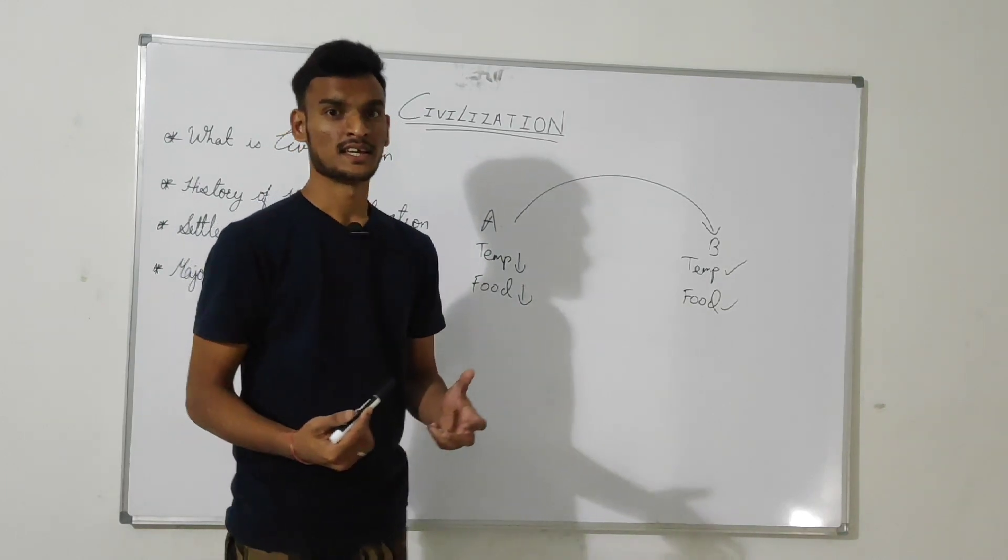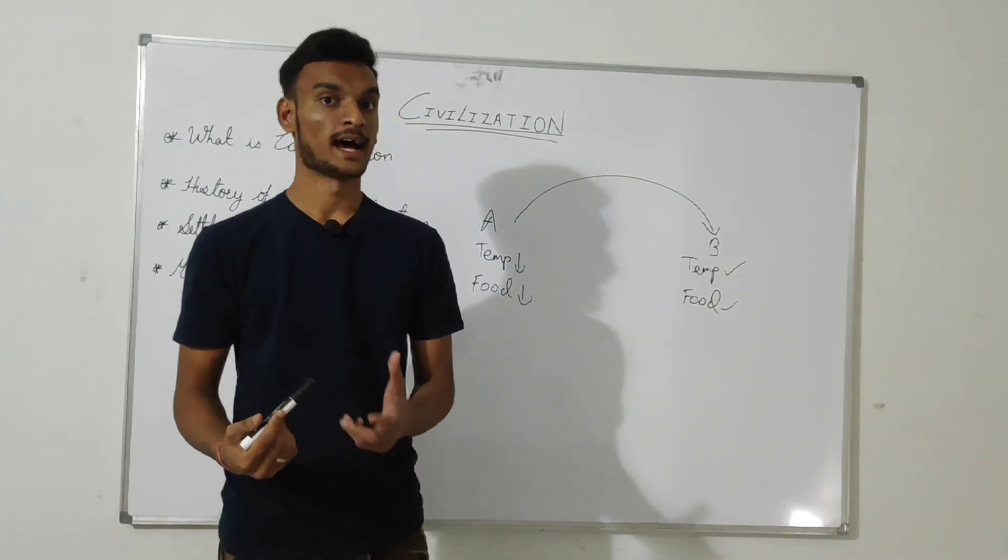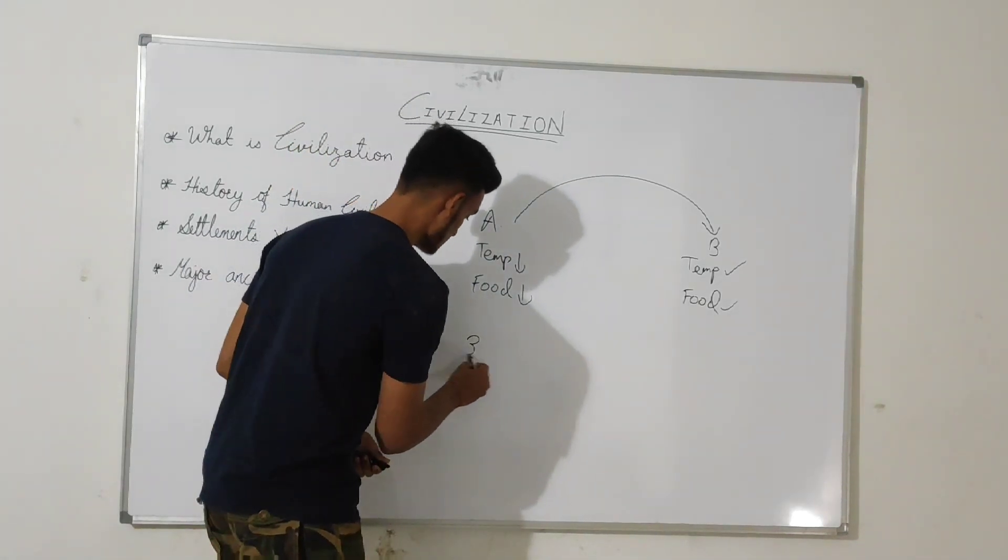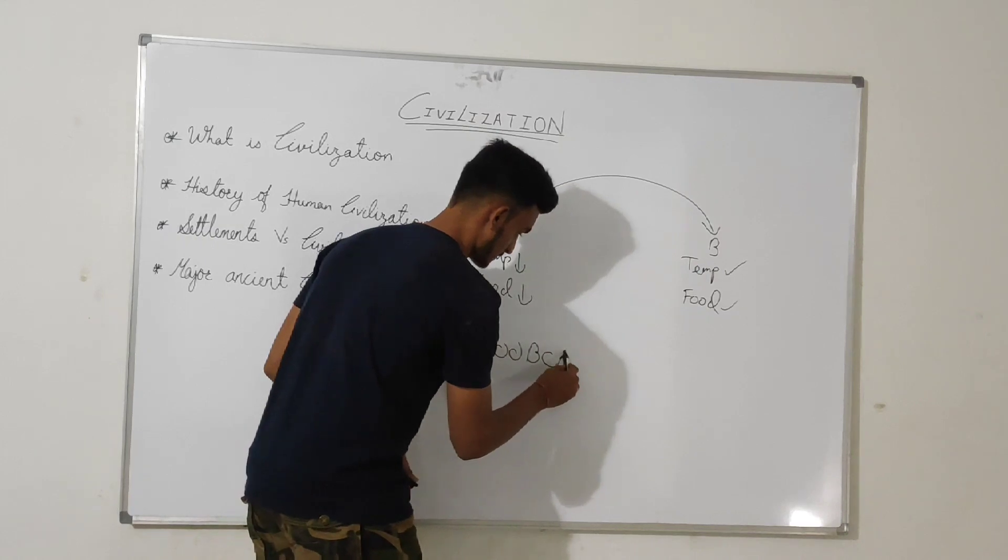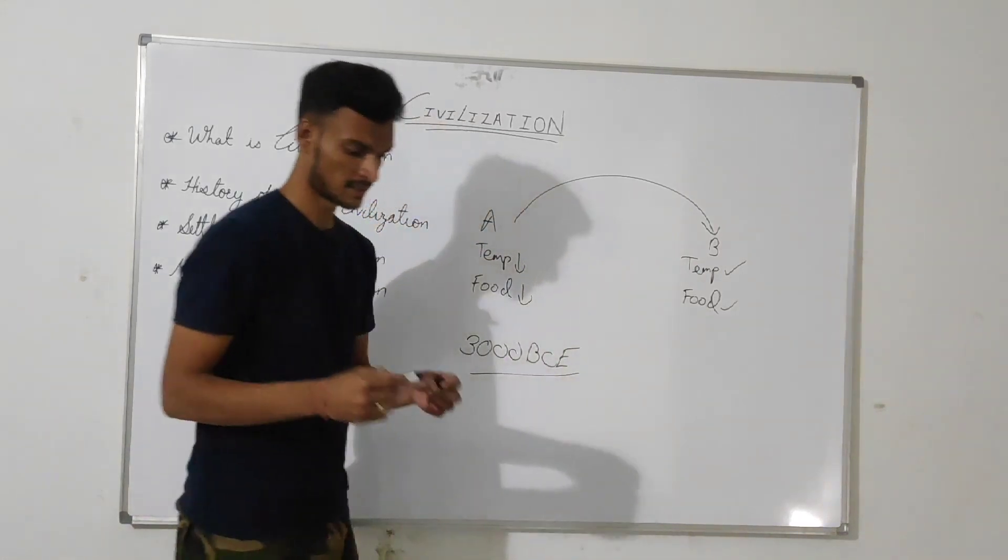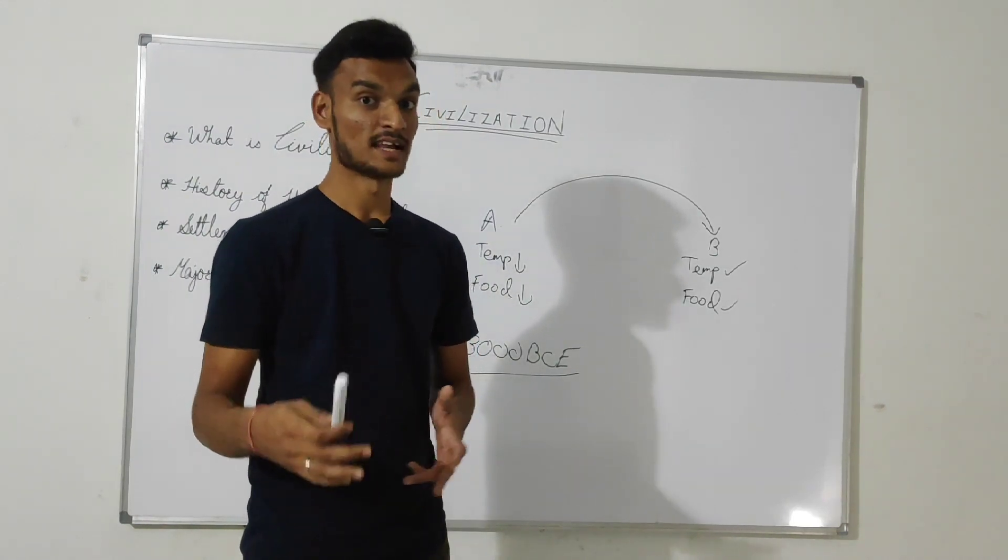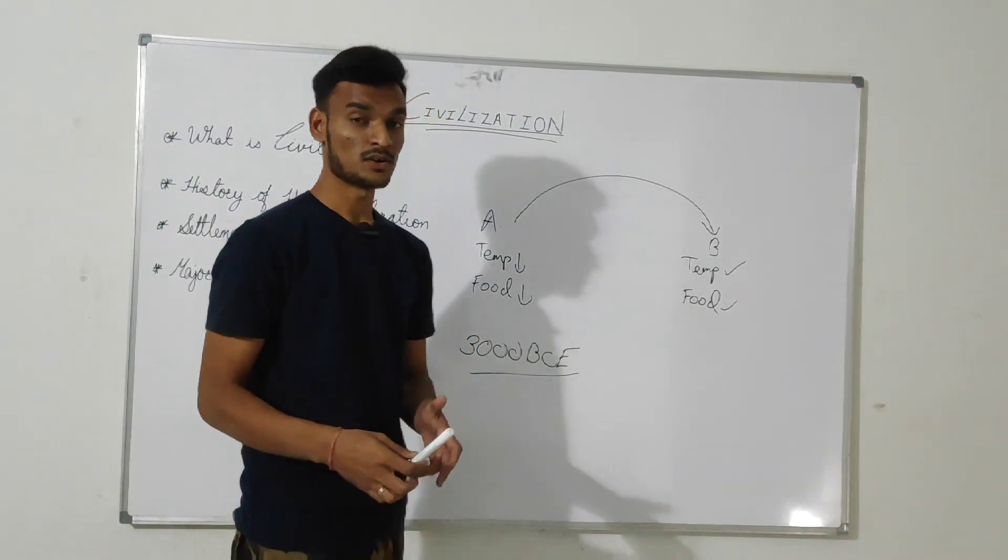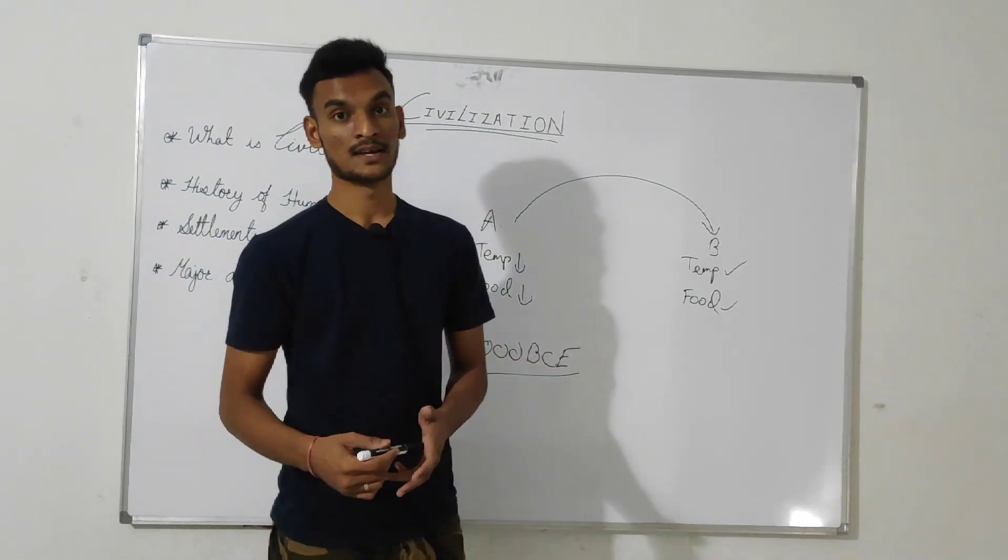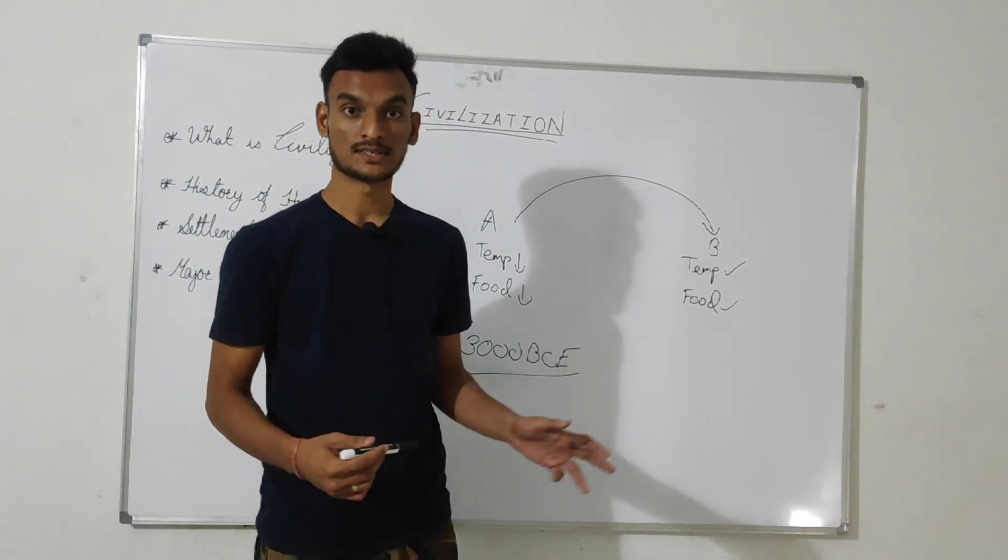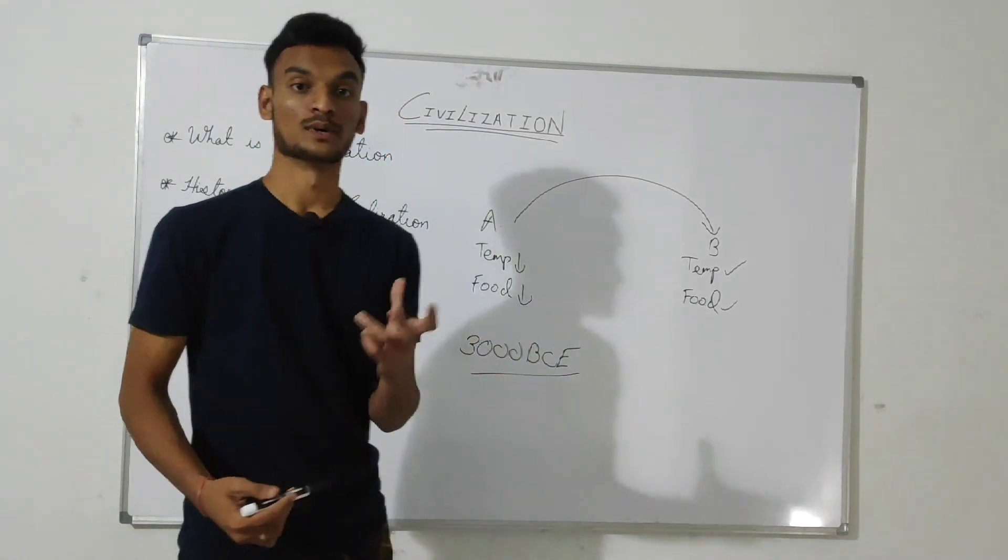And these settlements evolved further into more complex settlements. And by 3000 BCE, what could be described as a civilization came to occur on many parts of the globe. We can simply say many of those permanent settlements, those complex permanent settlements evolved into a civilization.